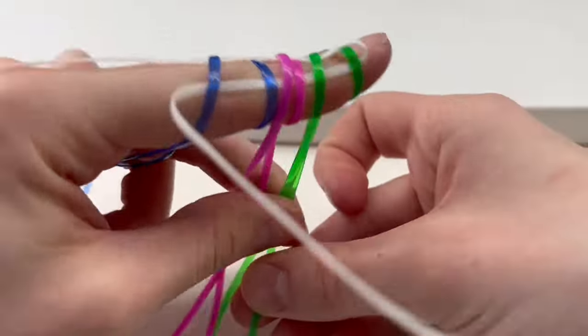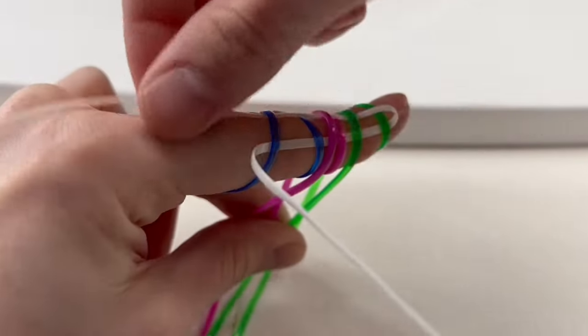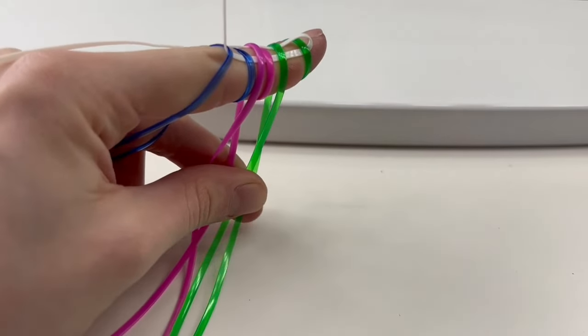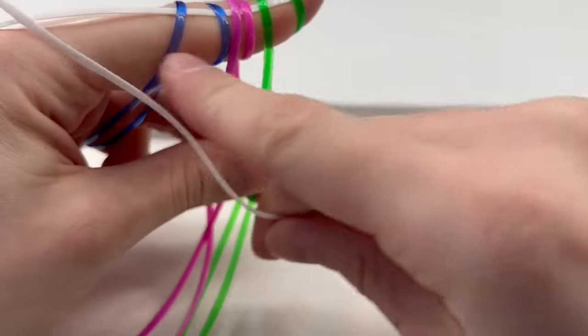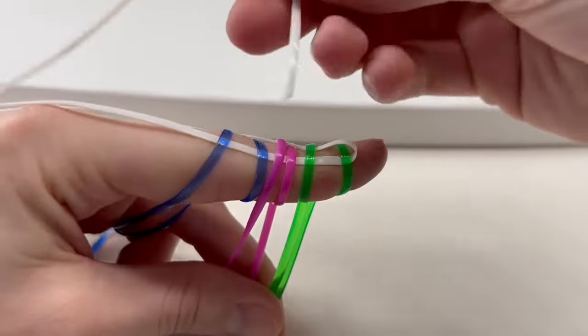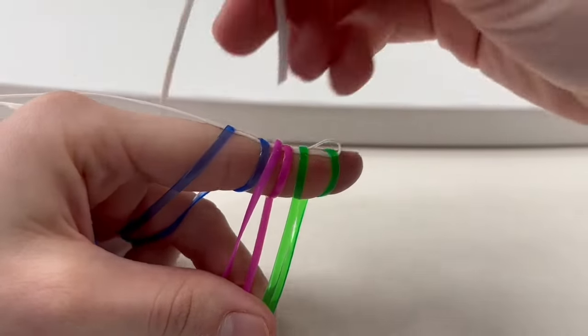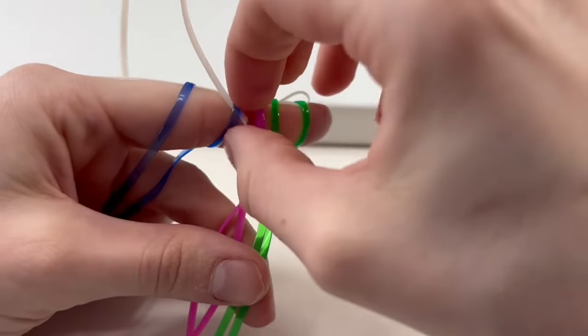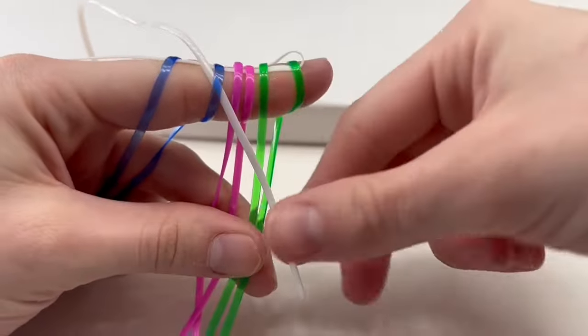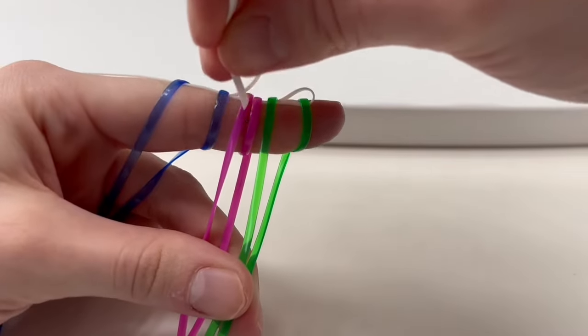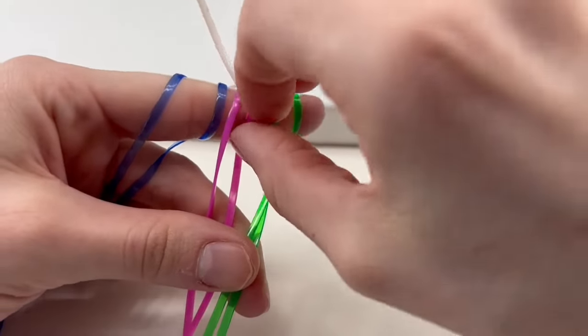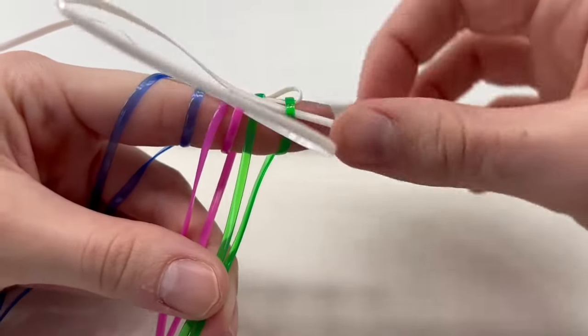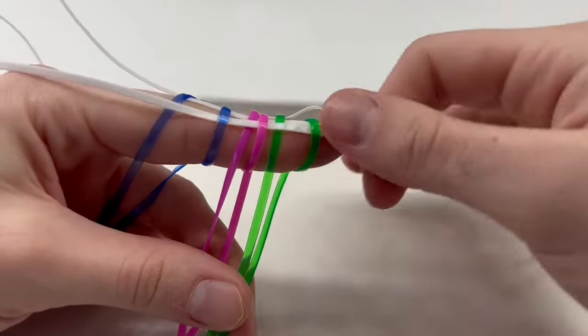So you see our tails on the end are locked in. Then we're going to take the front strand on the left side. Keeping this in the front. Going across. Over the tail and under the loop. Over, under. Over, under. Pulling it all the way through.